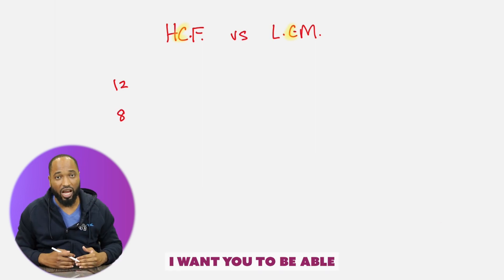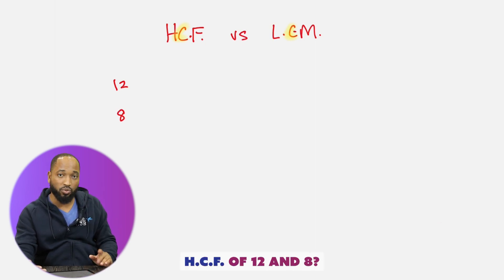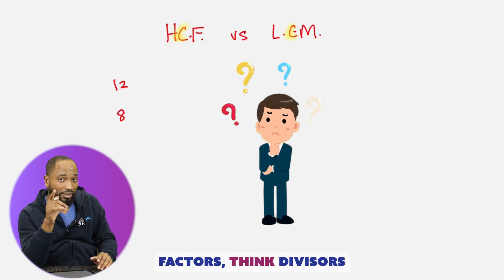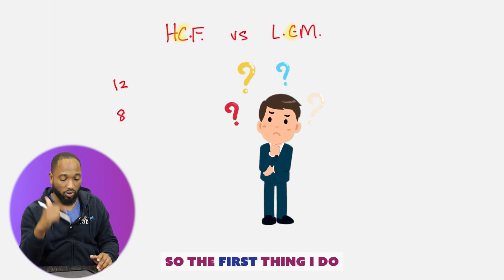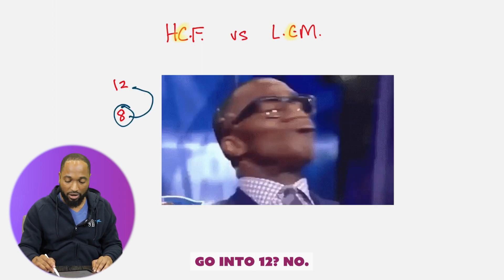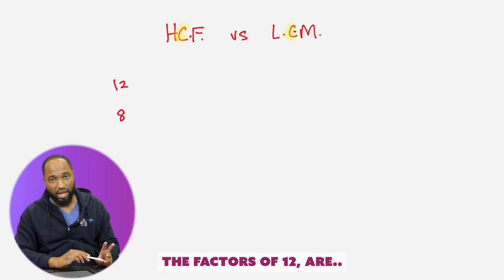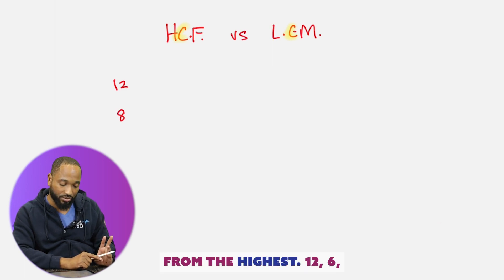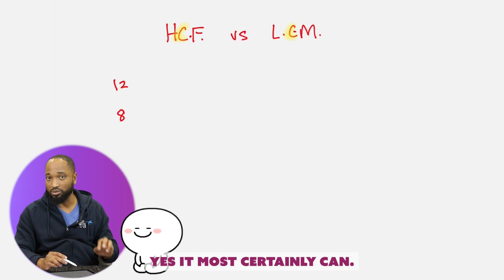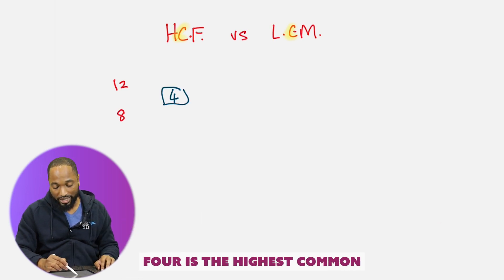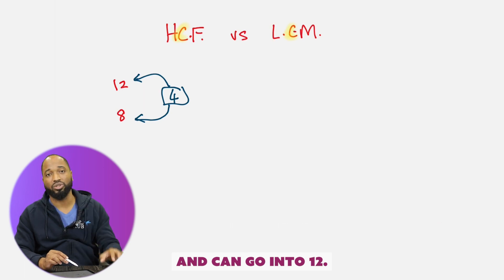12 and 8 — at this stage I want you to be able to find the highest common factor and lowest common multiple in your mind. What's the HCF of 12 and 8? Factors — think divisors, think exact divisors, numbers that can go in. They must be equal to or smaller than the number. The first thing I do is look at the smallest number. Can 8 go into 12? No, so it has to be an even smaller number. What are the factors of 12? Going down from the highest: 12, 6 — can 6 go into 8? No, so it's not common. Can 4 go into 8? Yes, it most certainly can. 4 is the highest common factor of 8 and 12 because it's the largest number that can go into both 8 and 12.